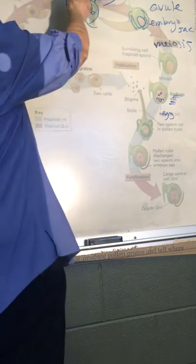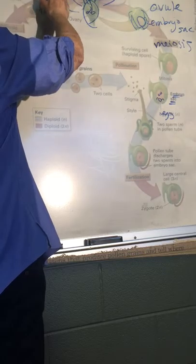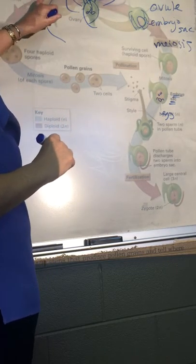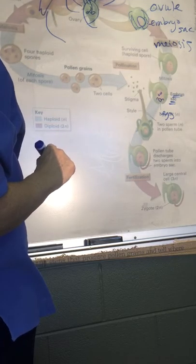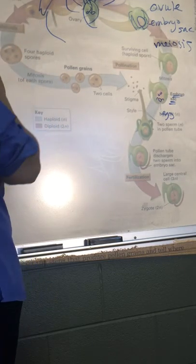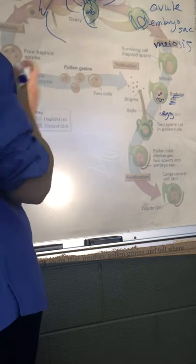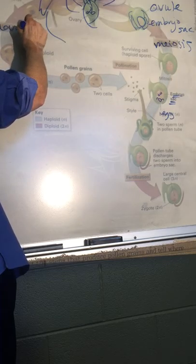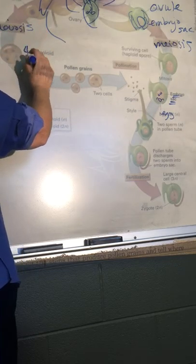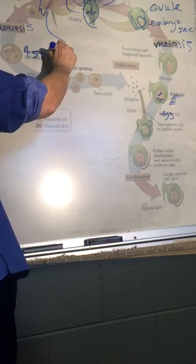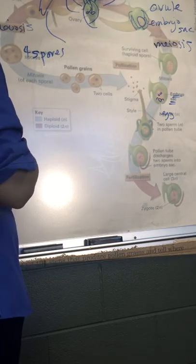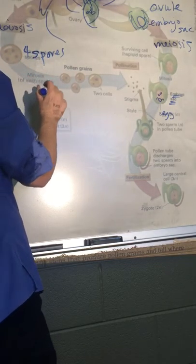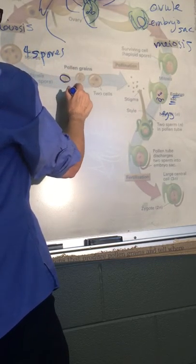Now let's follow around here to look at the anthers and what's happening there. Within the pollen grain, we have some structures—we'll call them microspores, actually—and they undergo meiosis to produce four spores.